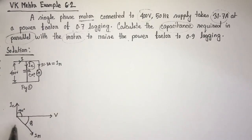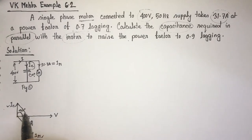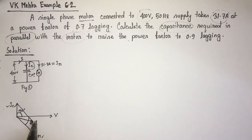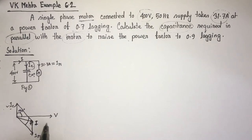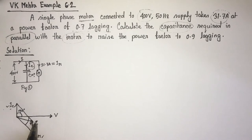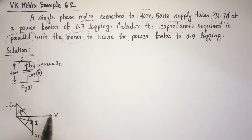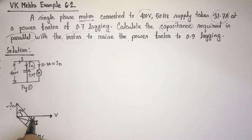Now if we take the phasor sum of I_C and I_M, it will become the combined current I. The current I after adding the capacitance will be lagging the voltage V by a certain angle — let the new angle be phi 2.